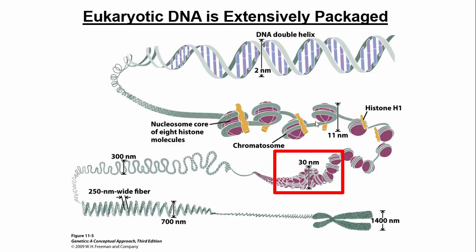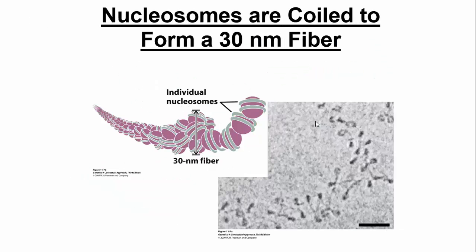Let's look at the next level of compaction — the 30 nanometer fibers. Nucleosomes are coiled further to form 30 nanometer fibers. This transmission electron microscope image shows what these 30 nanometer fibers look like. You can see how we're fitting all this DNA into these chromosomes, compacting them to such a degree where they can fit into the nucleus of a cell.